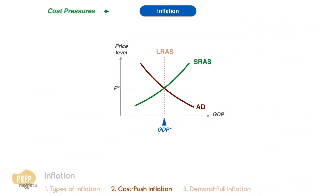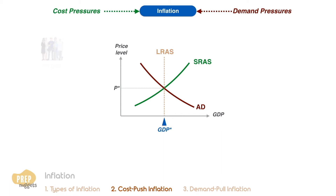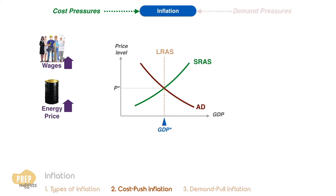Inflation can be a result of cost pressures or demand pressures. We've gone through this before in the lesson on macroeconomic equilibrium, so we'll briefly touch on it here. When the cost of an important factor of production, such as labor or energy, increases, the short-run aggregate supply curve of the economy is shifted to the left.